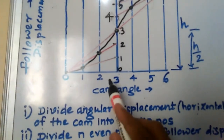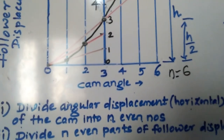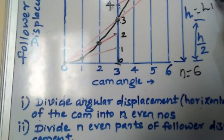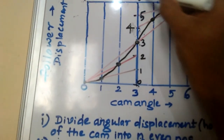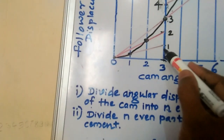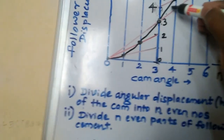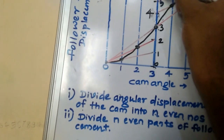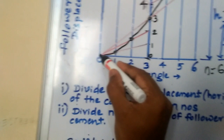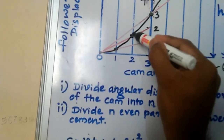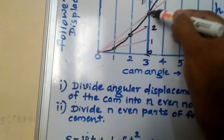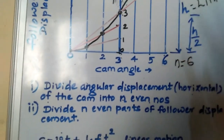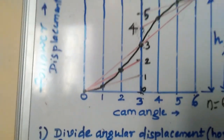Looking at the completed figure: divide horizontally into N equal parts — here N is 6. At the center you mark it. Vertically, divide the lift H into the same 6 divisions: 0, 1, 2, 3, 4, 5, 6. Then join from 0 to 1, 0 to 2, 0 to 3 above the diagonal, and similarly 4, 5, 6. Then join the locus of intersection points — vertical 1 to point 1, vertical 2 to point 2, vertical 3 to point 3, vertical 4 to point 4, vertical 5 to point 5, and point 6. This is the uniform construction of the uniform acceleration and deceleration displacement diagram.